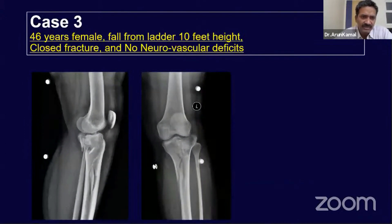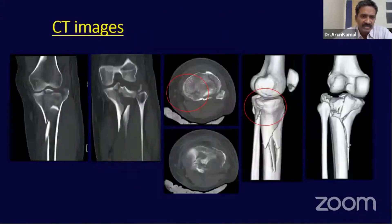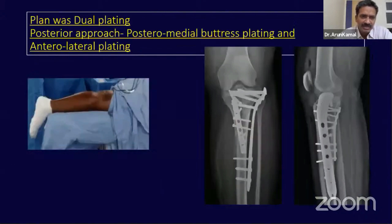My third case is a 46-year-old female who had a fall from a 10-foot ladder with a closed bichondylar tibial condylar fracture and no neurovascular deficits. CT scan revealed a large medial fragment, a posteromedial fragment, and severe lateral depression. We chose a dual approach — a posteromedial incision with a buttress plate, then turned the patient supine and performed anterior plating as well.